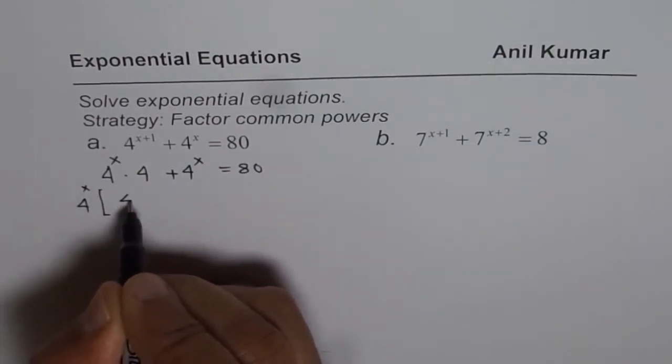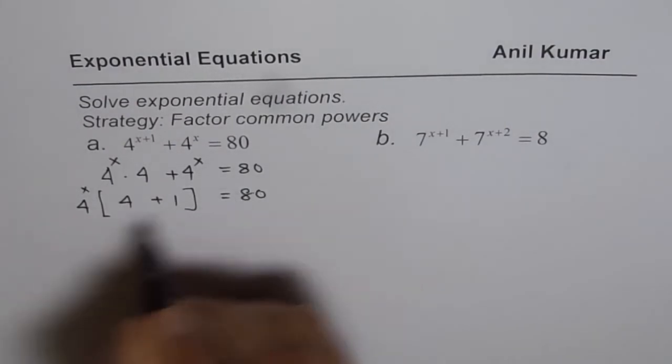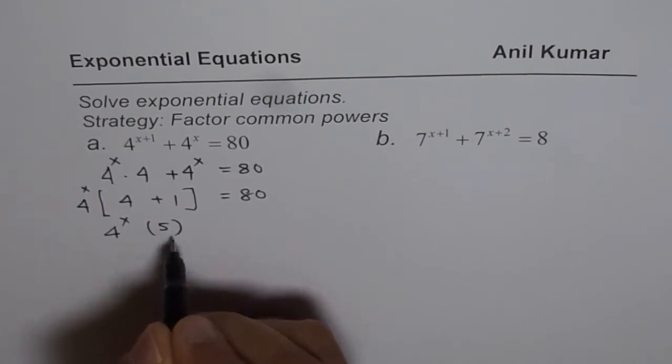Factor that out. You are left with 4 plus 1 on the left side, with 4 to the power of x. Now, 4 plus 1 is 5.